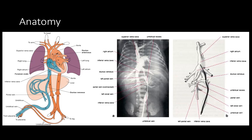Looking at the basic anatomy of the umbilical vein: there is a single umbilical vein which goes superficially from the umbilicus towards the head. There is a slight dilatation just before reaching the junction of the portal umbilical vein, called the umbilical recess, which is the first point where we find difficulty or resistance while inserting a UVC.